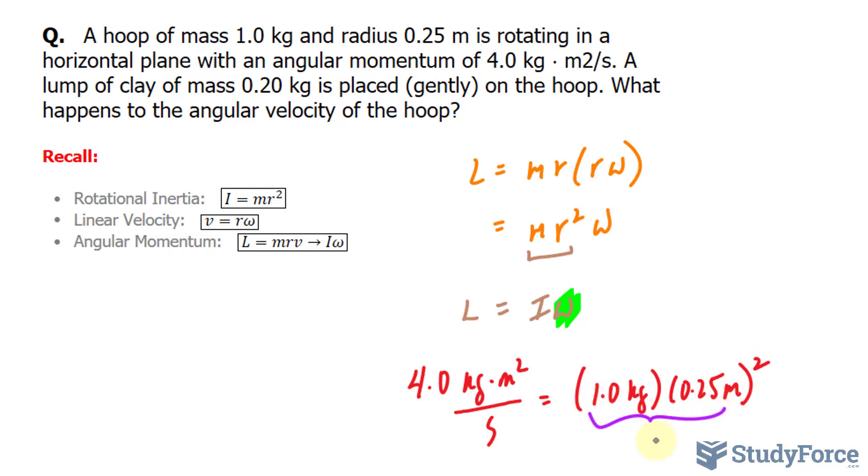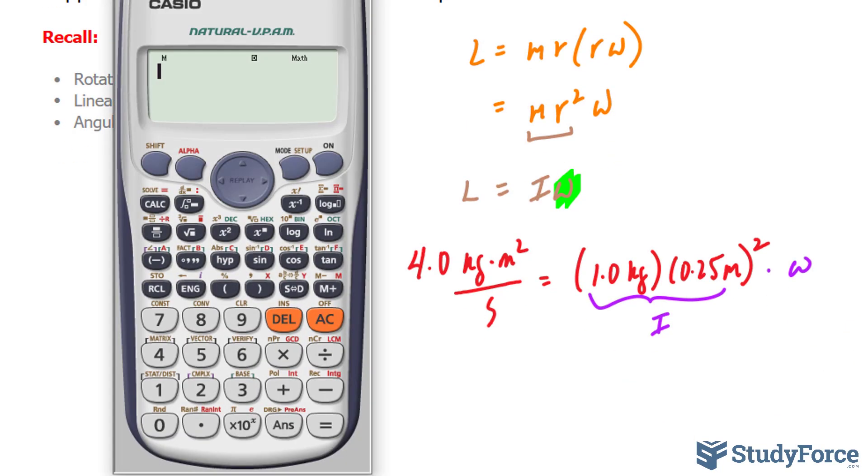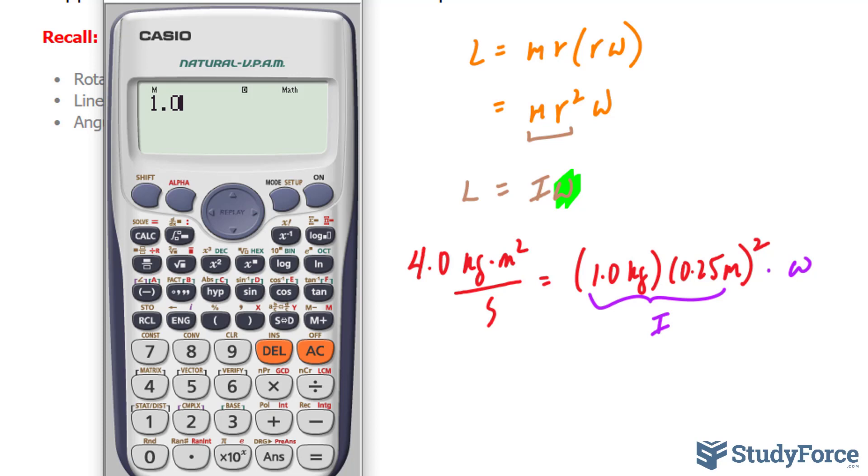So this part right here represents I, and that's all being multiplied to omega. Let's go ahead and multiply those two out: 1.0 times 0.25 raised to the power of 2. So that's the right side of the equation. Then we divide both sides by what we just found. So 4.0 divided by the answer we just found, and we get 64.